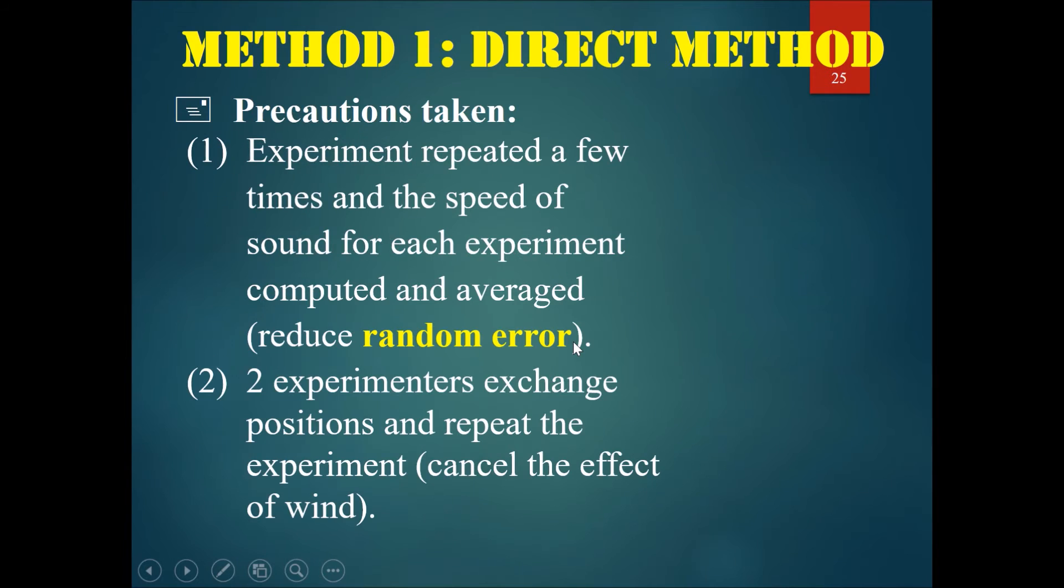Some precautions to take: the experiment should be repeated a few times and the speed of sound for each experiment should be computed and averaged. This would reduce random error. Secondly, this experiment may be slightly affected by wind through the open field, so the two experimenters could exchange positions and repeat the experiment, which would cancel the effect of wind.